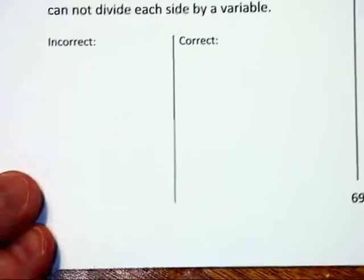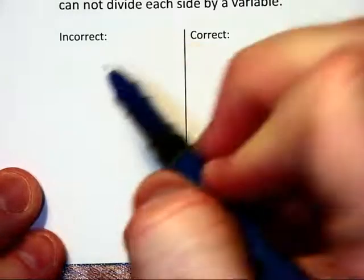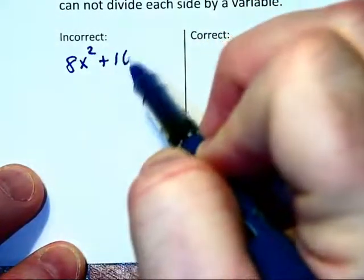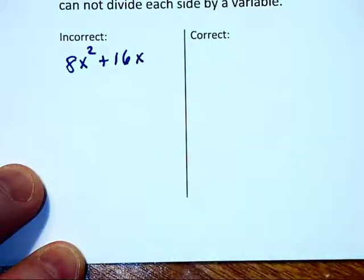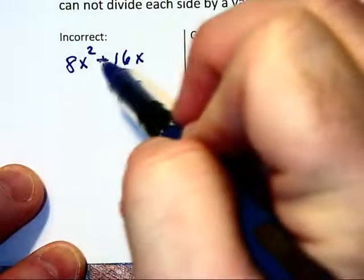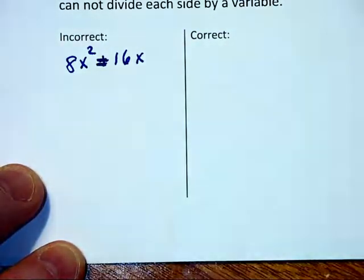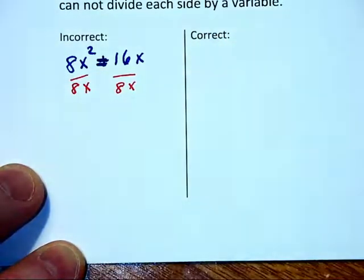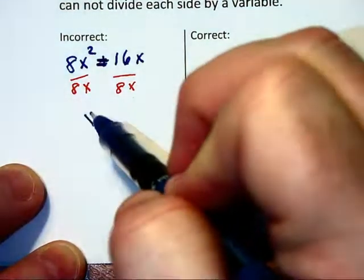Let's take a look at what I mean right down here in this next problem. Let's say we have 8x squared equals 16x. If you say to yourself, let's divide each side by 8x, then you end up getting x is equal to 2.